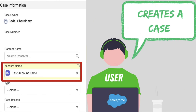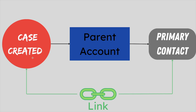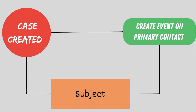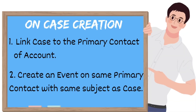Let's say there is a user and he creates a case record and selects an account record. This account record has a primary contact on it. Our first task is to link this case to the primary contact of the parent account. Our second task is, on creation of the case, we need to create an event on that same primary contact with the same subject as the case. So these are the two tasks we need to do on case creation.